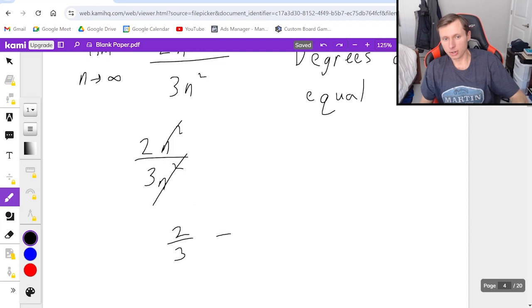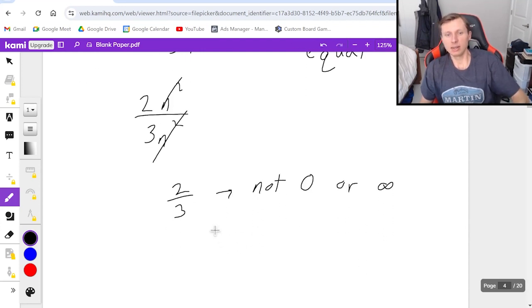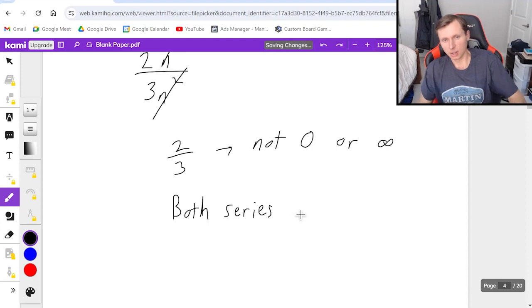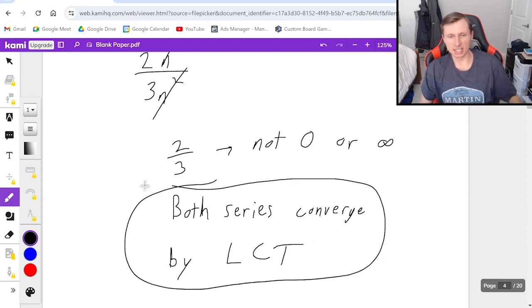Now, because 2 thirds is not 0 or infinity, it means both series are going to converge. And then we say by the limit comparison test, which I'll just write LCT for short. And there, that's it.